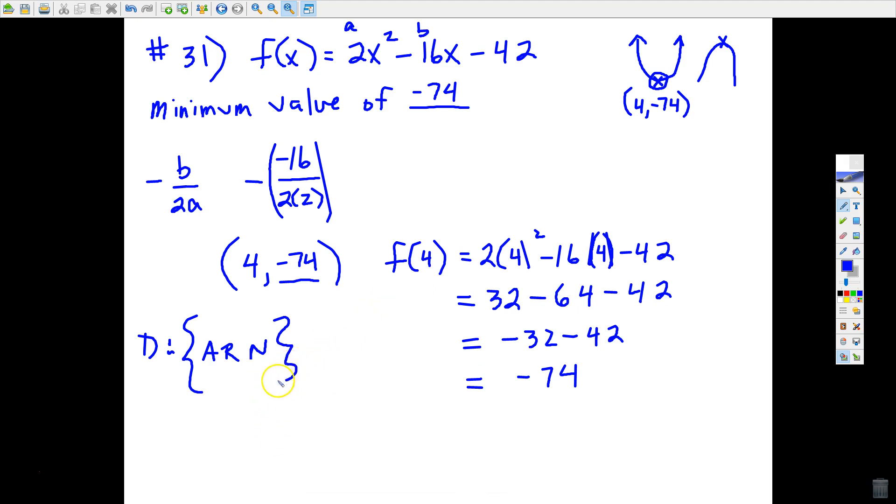It's just going to encompass all of the numbers on the x-axis. The range, however, is going to vary because we're only interested in what numbers will be used or involved in this graph on the y-axis. I don't have a graph here, but let's just put a little sketch. That might help us make sense of this. If I were to estimate, let's just say that (4, negative 74) is here, down here in quadrant 4.